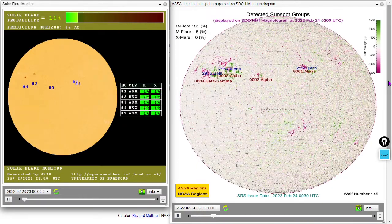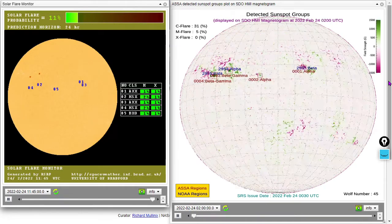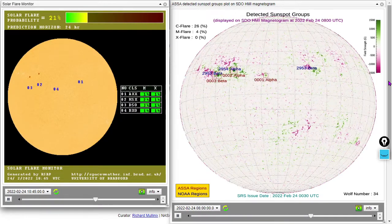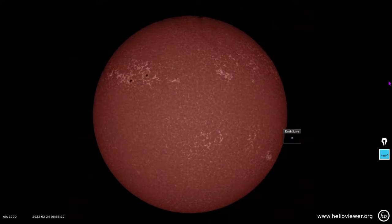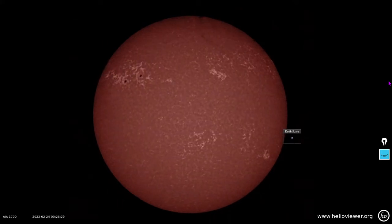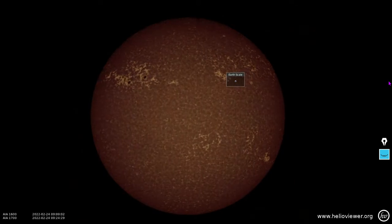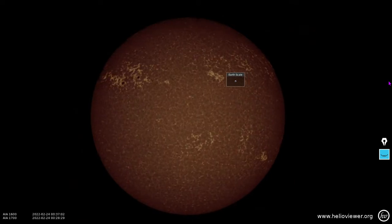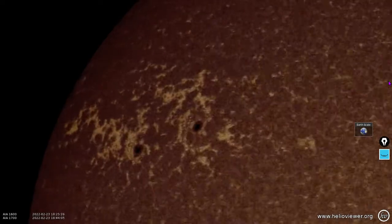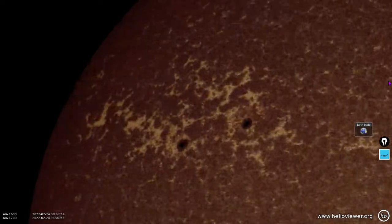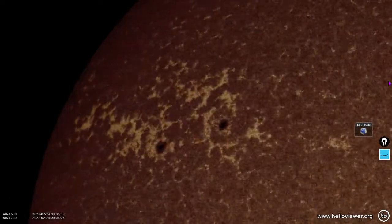It's got both north and south polarity umbra. Here's 1700 angstroms. We're going to add 1600, that's ionized carbon, and here's a close-up in these wavelengths, 1600 and 1700 angstroms from the SDO.